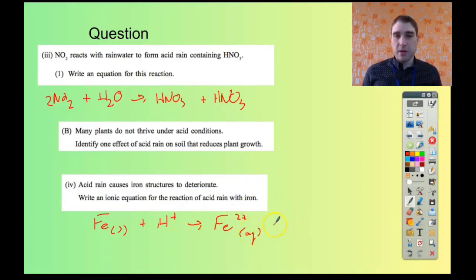Acid with metal goes to salt plus hydrogen gas. Now I just need to balance it. I need two hydrogen ions here, Fe2+, and there we go.